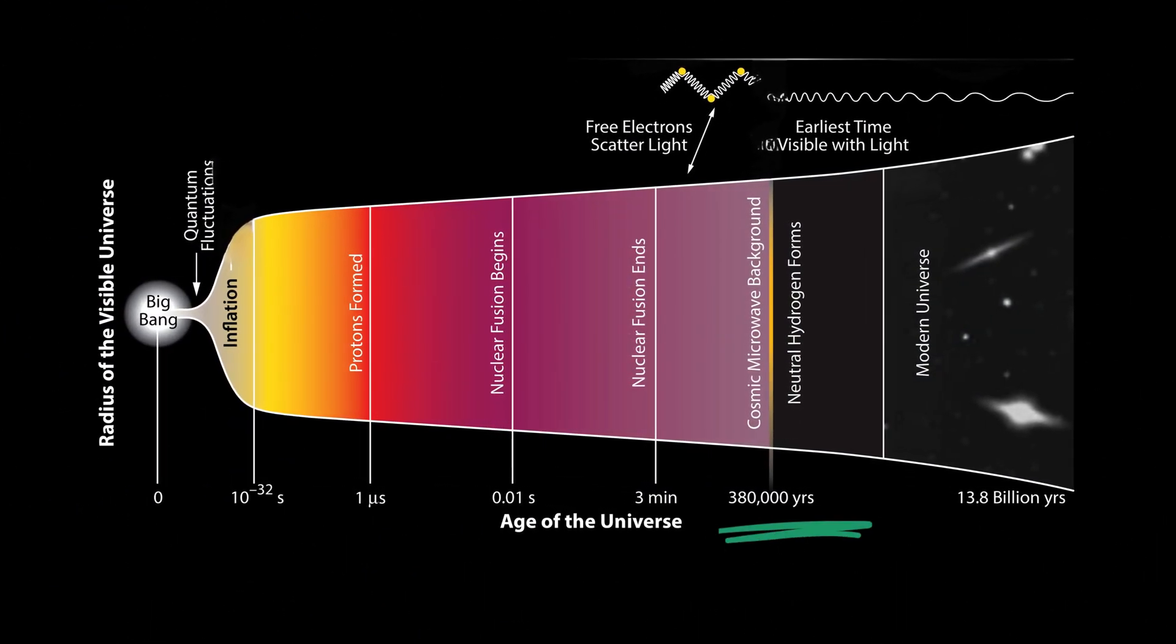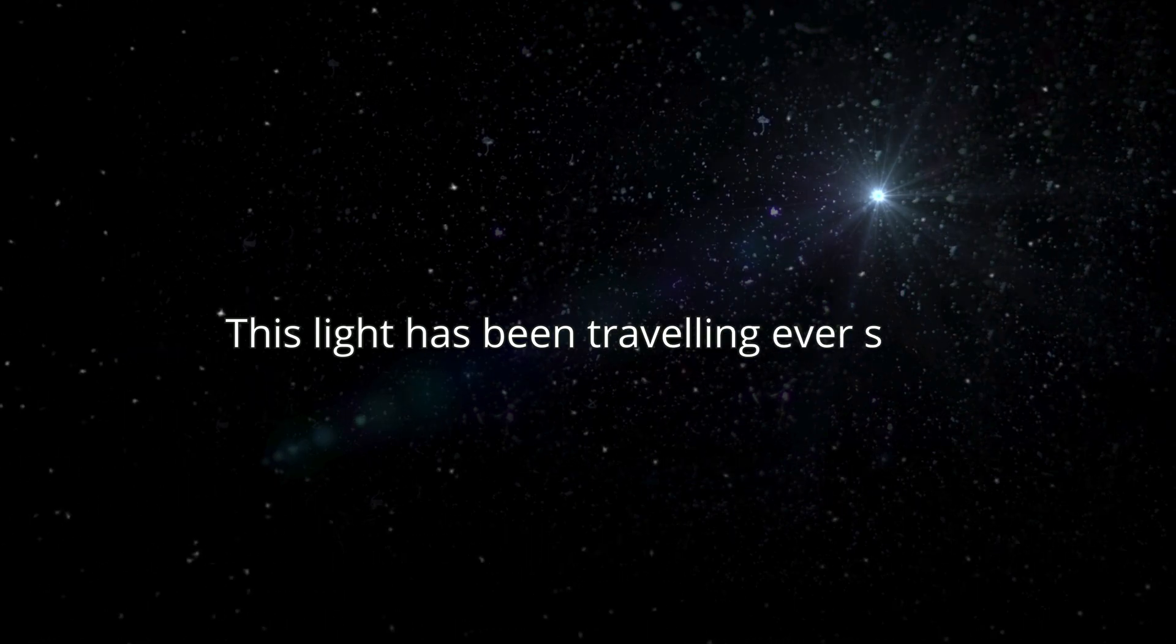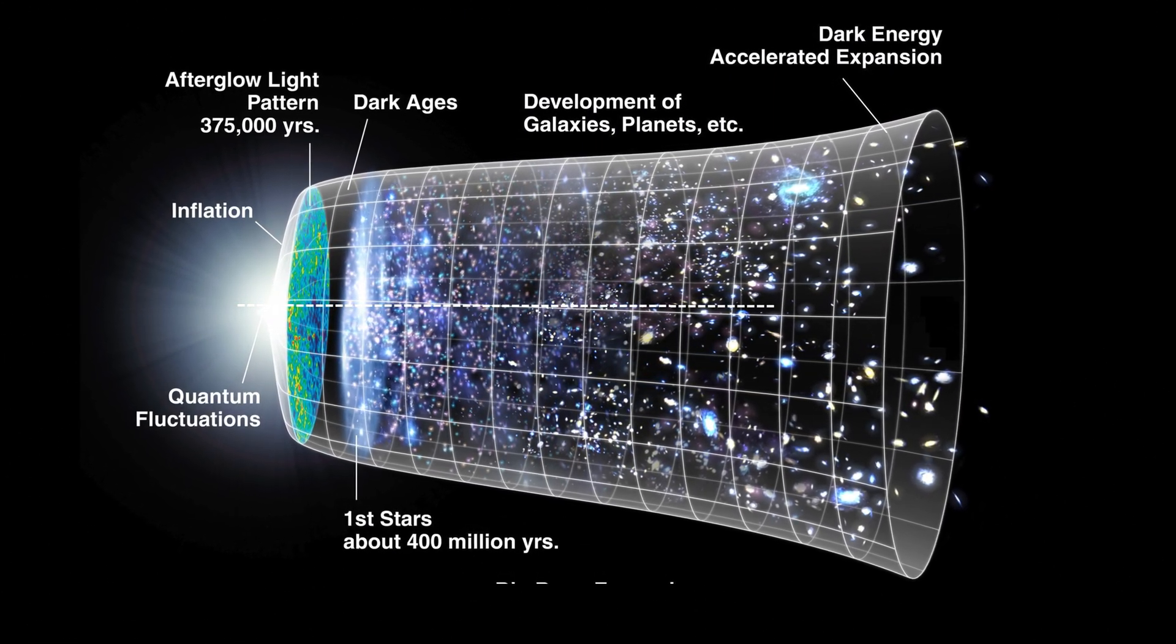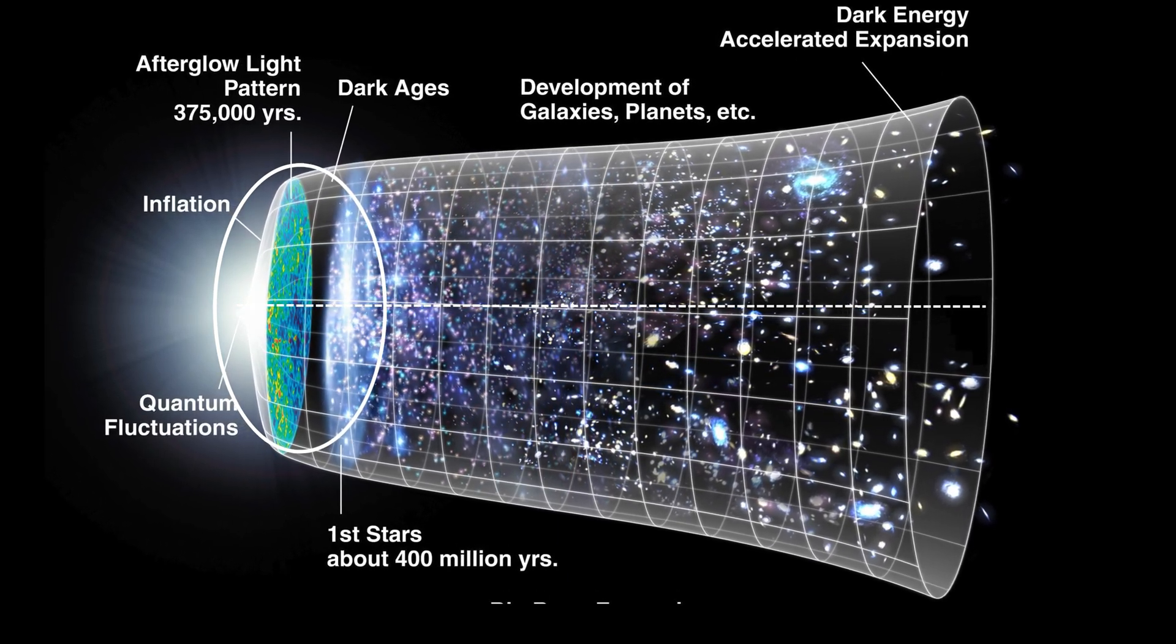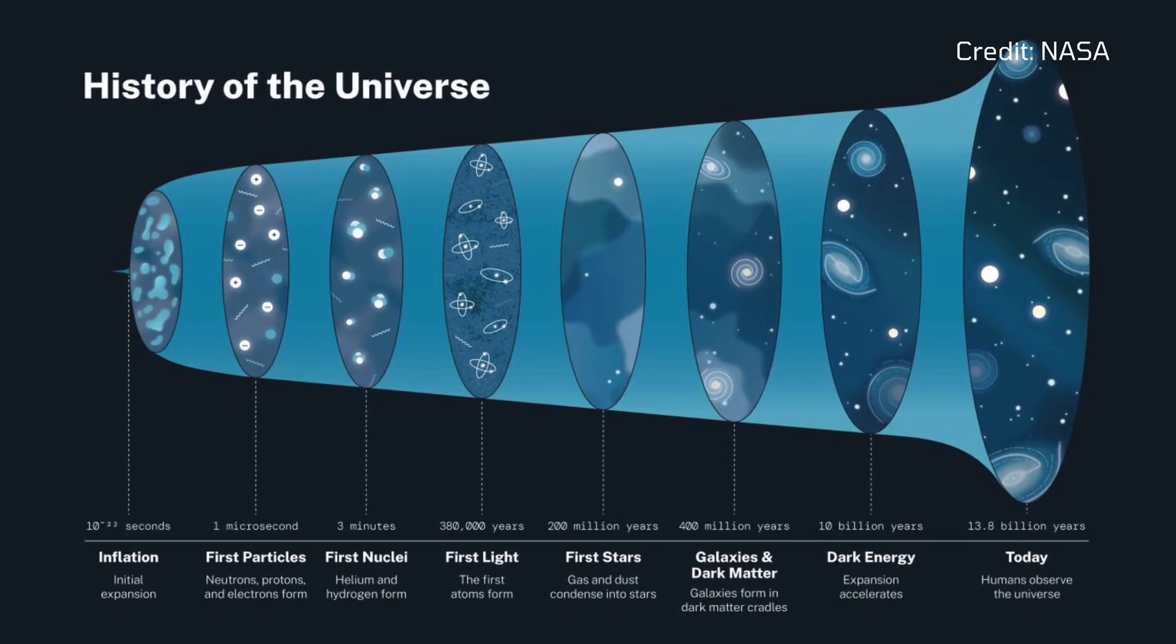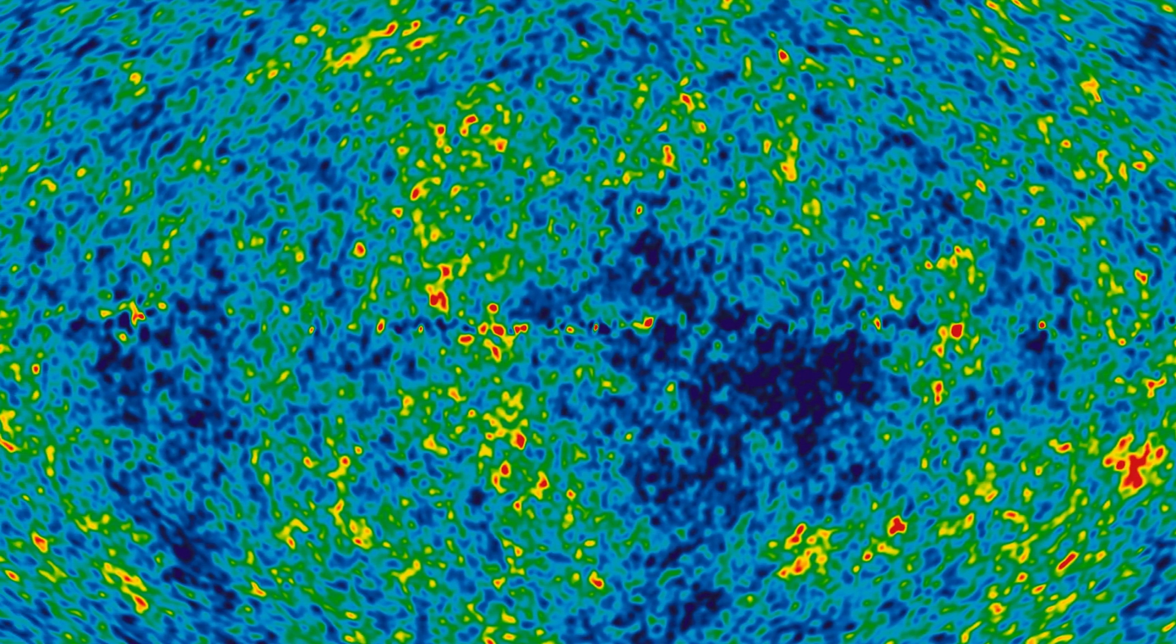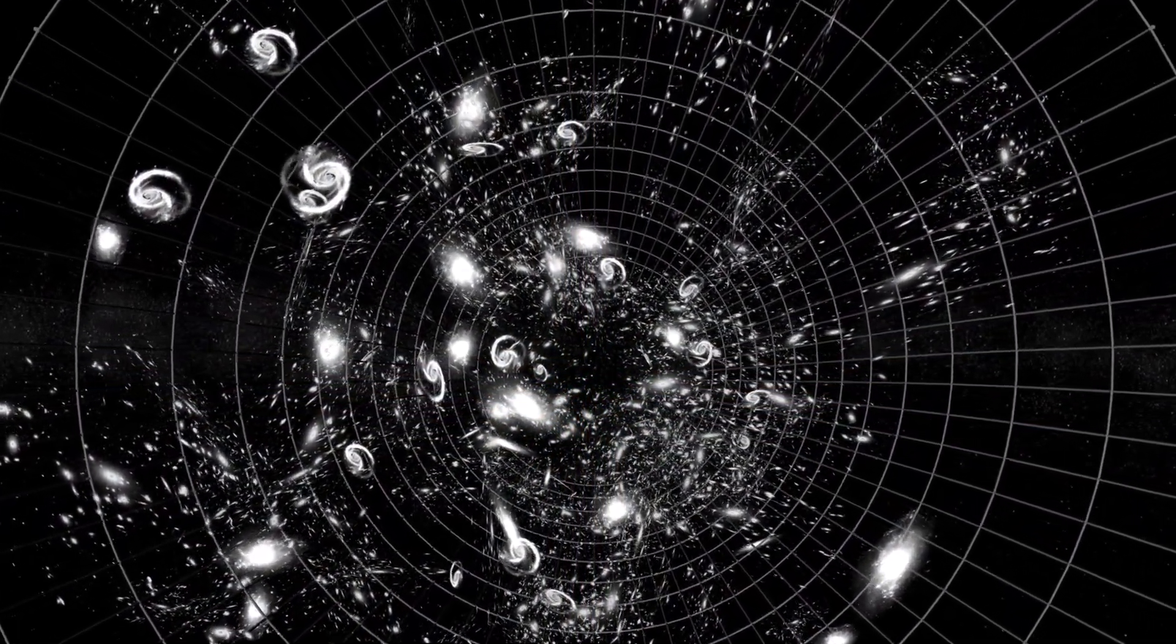During the first stage, when the universe was only 380,000 years old, it cooled enough for light to travel freely through space. This light has been traveling ever since, stretching into microwaves as the universe expanded, forming the CMB we detect today. From the properties of CMB, one can learn about the state of the universe at that moment and its subsequent development. By analyzing the CMB, we can understand the universe's age, shape and expansion rate.